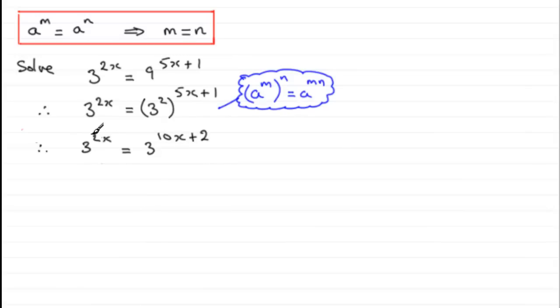Now we've got our two terms, both to the same base. And what we can say now is that the powers here must be exactly the same, using this idea here. So therefore, we can just say that 2x must be equal to 10x plus 2. And now we've just got a simple linear equation which we can solve.